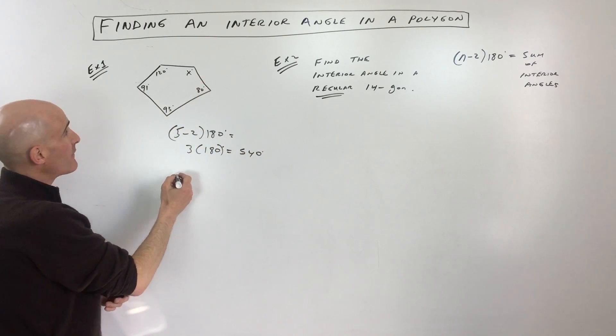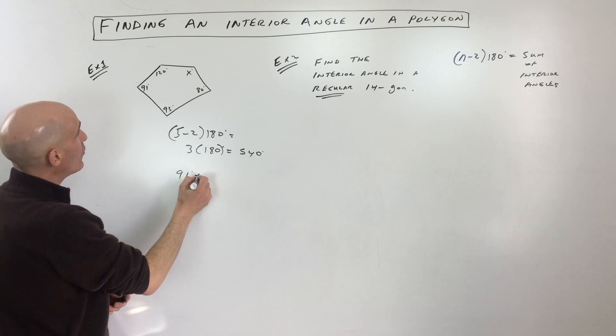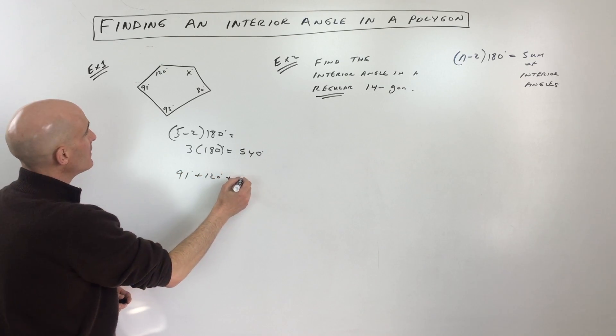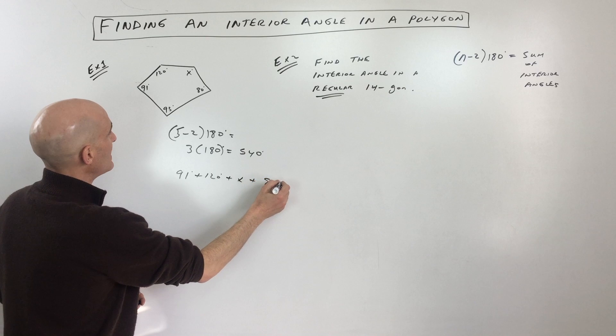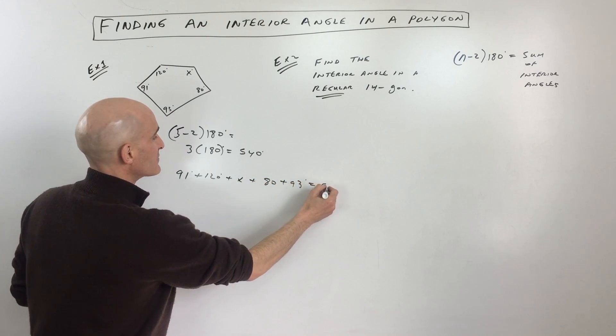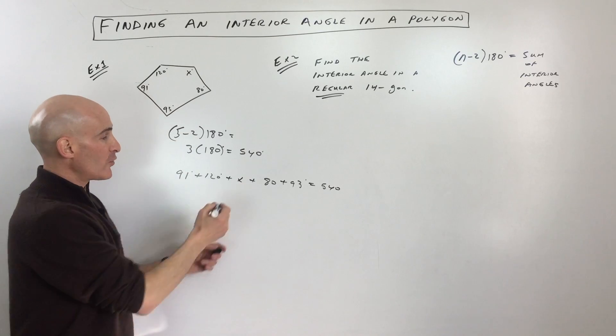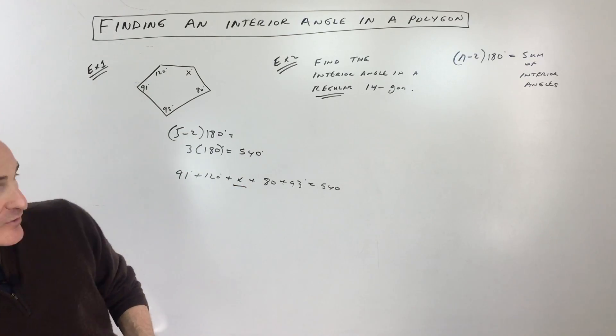All these angles have to add up to 540. So let's make an equation: 91 plus 120 plus x plus 80 plus 93 has to add up to that 540. So all we need to do now is solve for x, and we've got it.